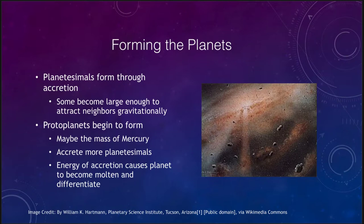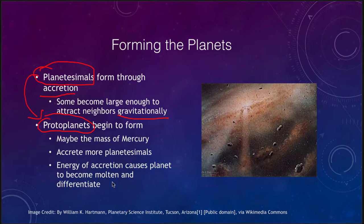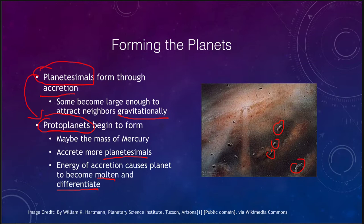So how did we form these planets? It's through a process we call accretion. Some of these planetesimals begin to form larger and larger objects and become large enough to gravitationally attract their neighbors. The planetesimals that originally formed begin to become what we call protoplanets — perhaps the mass of Mercury or so — and they begin to accrete more planetesimals. Their gravity is stronger, and they start to pull in more objects, growing larger and larger. Eventually, the heat of all those impacting materials causes the planet to be molten and to differentiate, so metals sink down to the core and lighter materials rise to the surface. They build up through a slow process that could take millions or tens of millions of years.